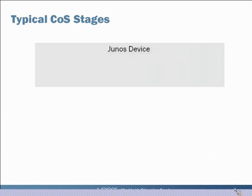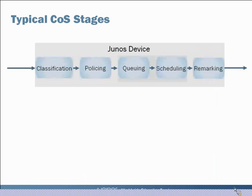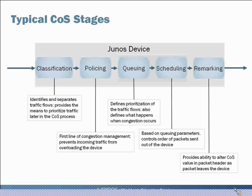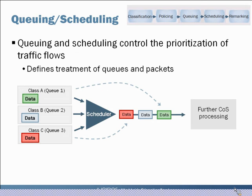We start as always with our home page showing the typical CoS stages as you move through a Junos device. Moving on to queuing and scheduling: when you think of class of service in a fundamental way, you think of the prioritization of traffic over other traffic, dropping traffic when the device gets congested, and differentiating the treatment of packets as they move through the device and out onto the wire downstream. That's really the function of scheduling, using schedulers to provide that functionality.